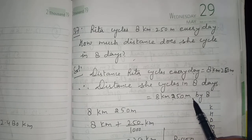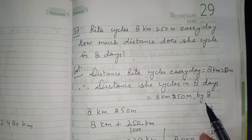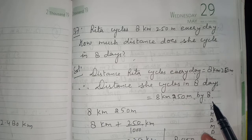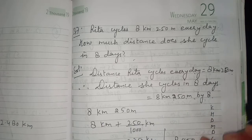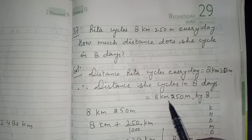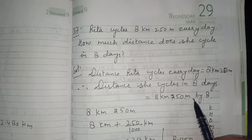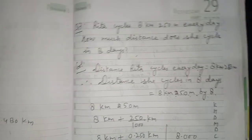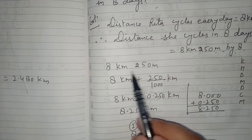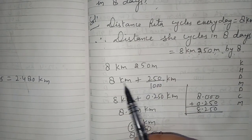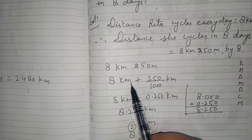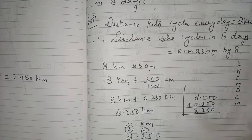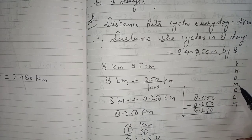Therefore, distance she cycles in 8 days = 8 km 250 m × 8. We first convert to kilometers. The 8 km stays as is, and 250 meter is converted to kilometers. Using the king-henry-died-mother-did-not-cry-much formula: millimeter, centimeter, decimeter, meter, decameter, hectometer, kilometer.